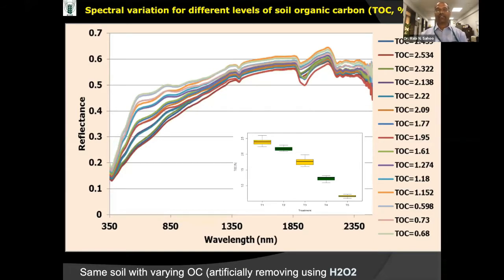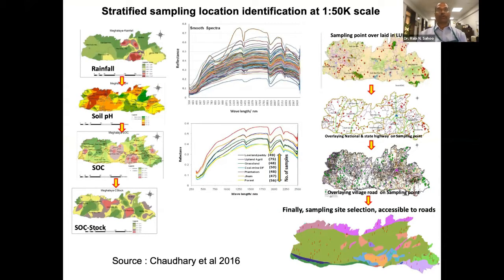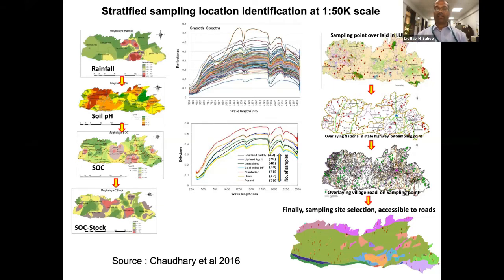As a basic study, we took the same soil and artificially removed organic carbon content with hydrogen peroxide treatment — you can see how the spectral signature changes. These are fundamental studies we do with organic carbon, nitrogen, phosphorus, and potassium to understand what part of the spectrum is really getting affected — to understand the basic physics and spectrometry. Coming back to soil sampling, we do different stratified soil sampling with standard protocols for spectral data collection. This is from Chaudhary Etel at the ICAR Research Centre at Barapani — a very difficult terrain where soil sampling for spectra is challenging.